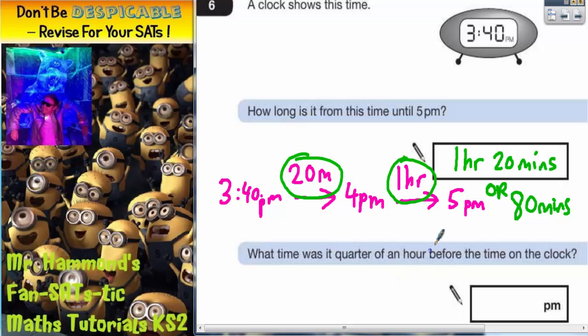Well, because it says before, that means we've got to take off a quarter of an hour. And a quarter of an hour is 15 minutes, so we've actually got to subtract 15 minutes from this time.